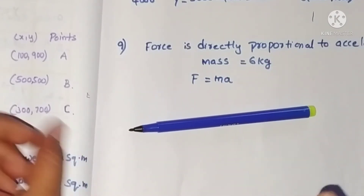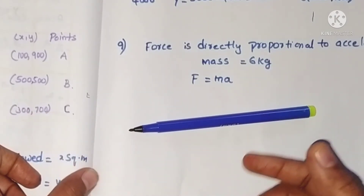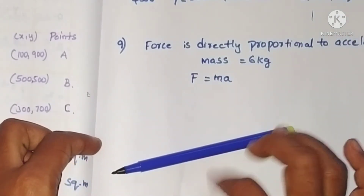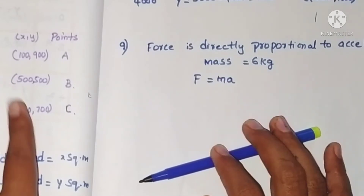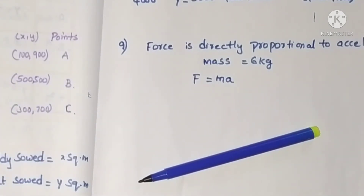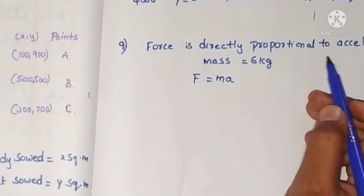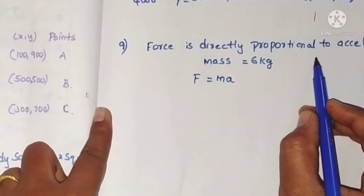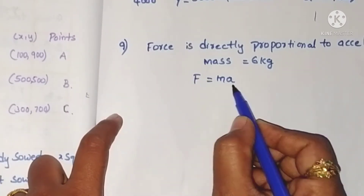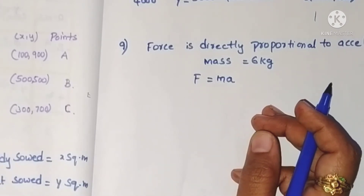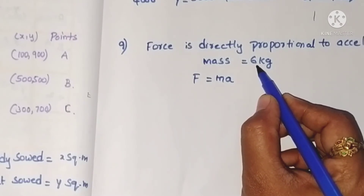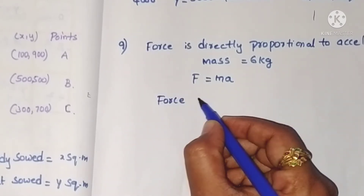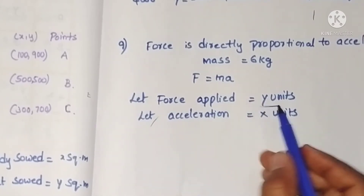If we want to move an object, we have to apply some force — the more force we apply, the more speed it moves with. Directly proportional means when one quantity increases, the other also increases. So here, F equals MA — this is Newton's second law of motion. We have mass M equals 6, force applied as Y units, and acceleration as X units.